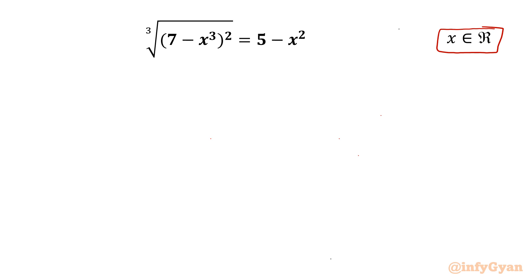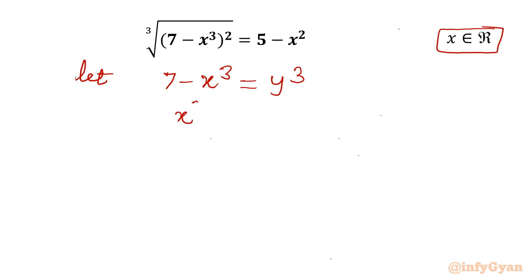Let's get started by considering the substitution 7 minus x cubed equal to y cubed. From this substitution equation itself I can write x cubed plus y cubed equal to 7, and this I will call equation number 1.